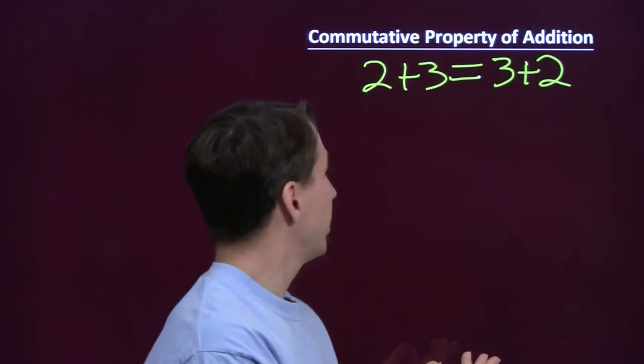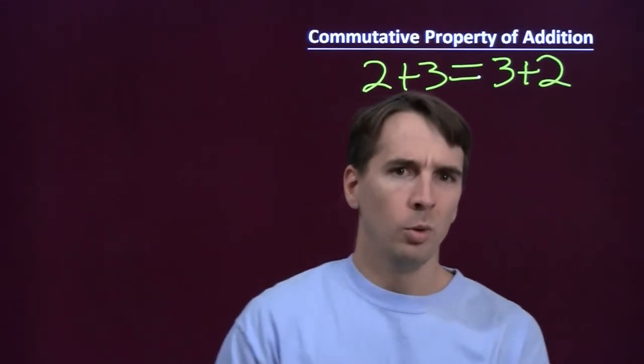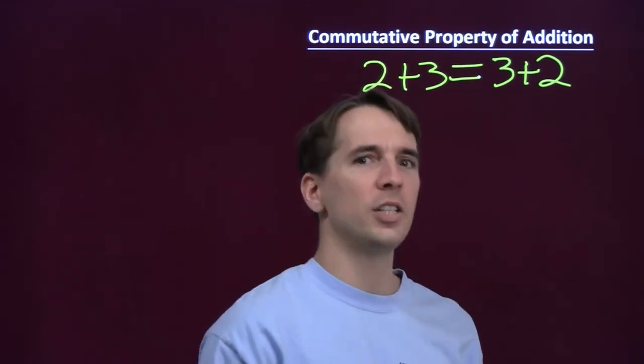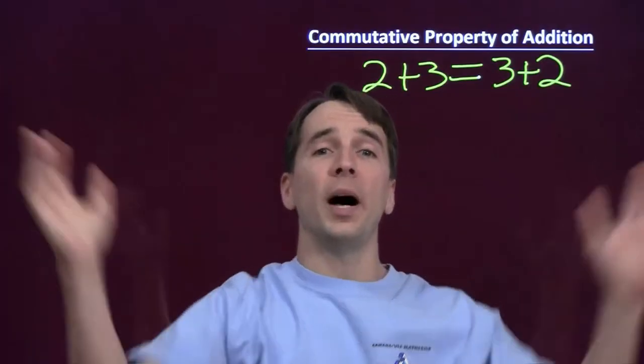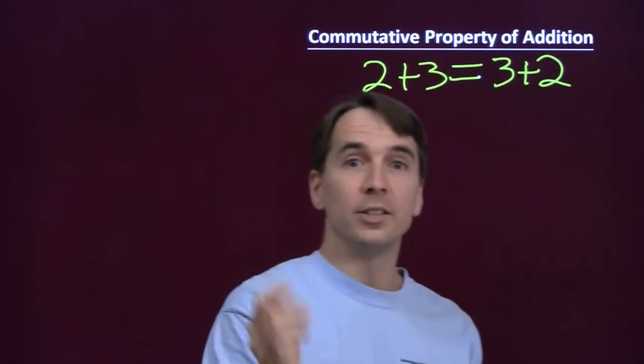And there's nothing special about 2 and 3. We could write 4 plus 5 is 5 plus 4. 9 plus a million is a million plus 9. We don't want to have to write down all those equations as rules. What we want to do is write down just one equation that stands for all the possible equations that tell us that it doesn't matter what order you add the two numbers in.